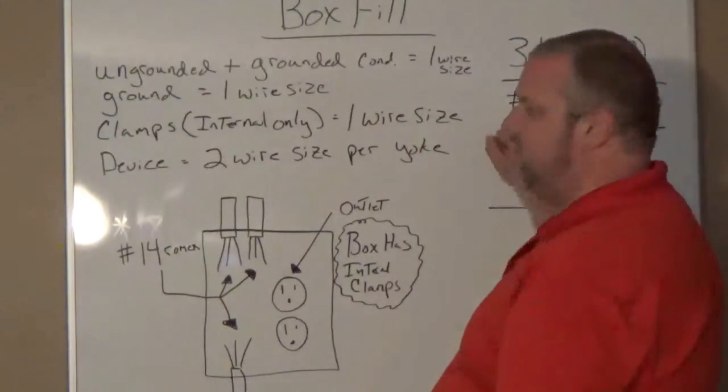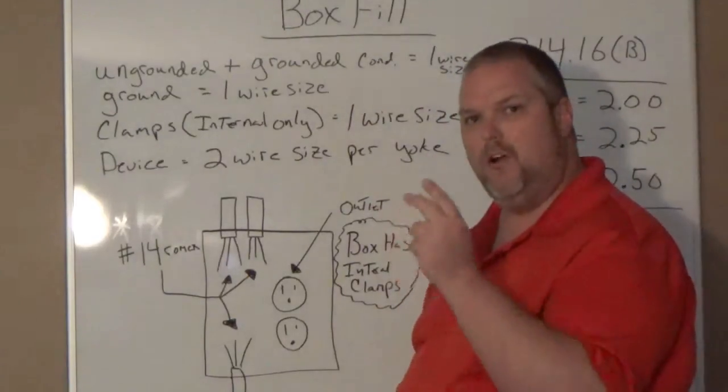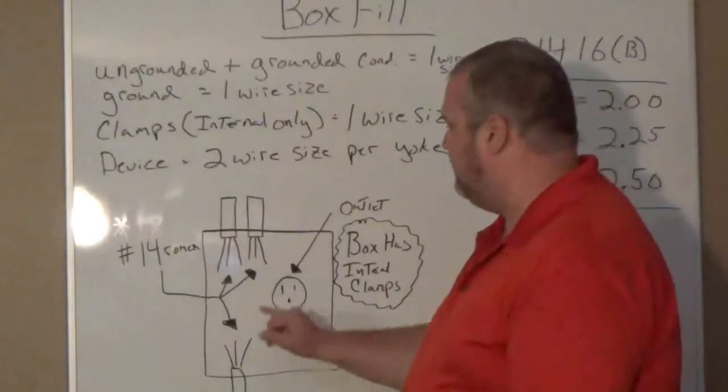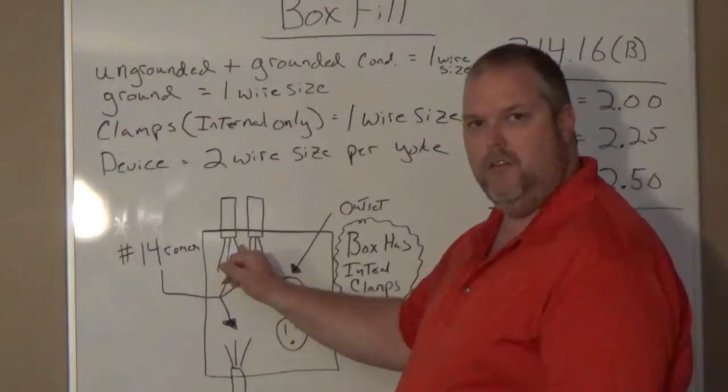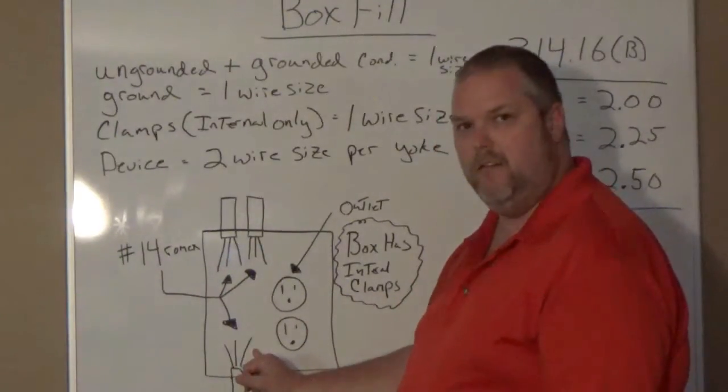So let's do this calculation. If I'm using 14, 14 is two cubic inches per wire or conductor. So we're going to use two. Keep it simple this time. We have hot wire. We have neutral wire. We have hot wire. We have neutral wire. We have hot wire and neutral wire.